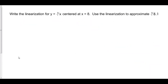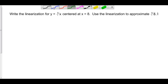Write the linearization for y equals the cube root of x centered at x equals 8. Use this linearization to approximate the cube root of 8.1. There are two things that we need for linearization: we need a point and we need a slope. The point is 8 comma 2, since plugging in 8 gives you 2.